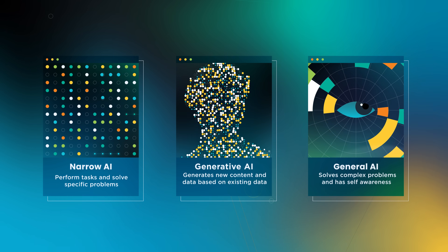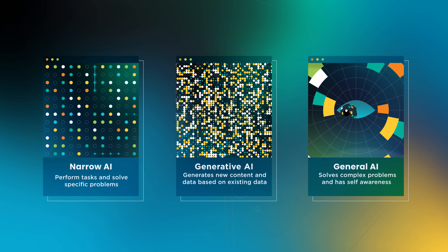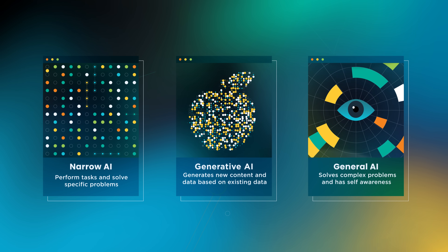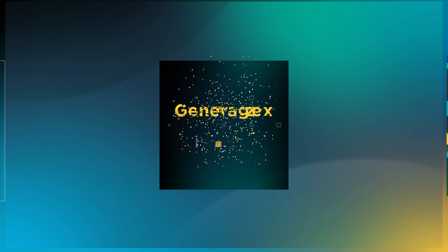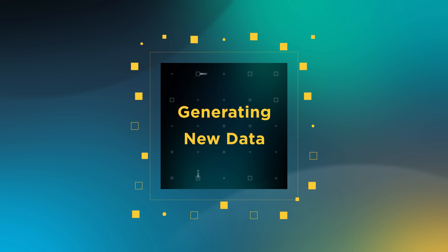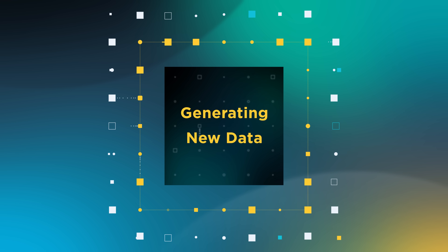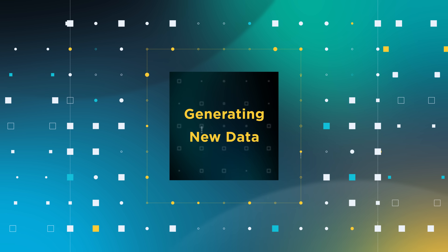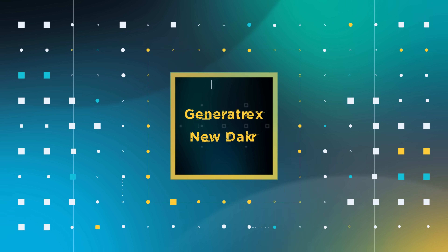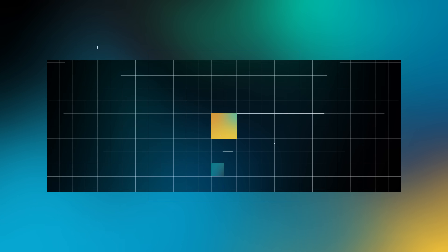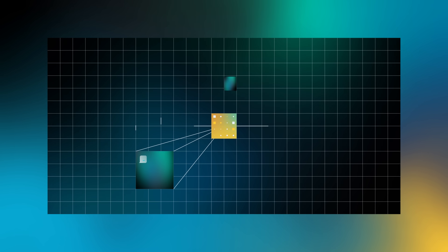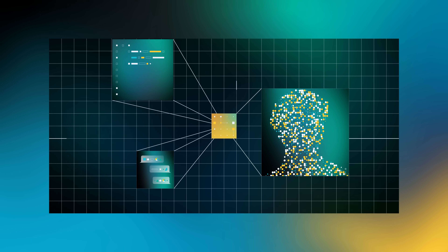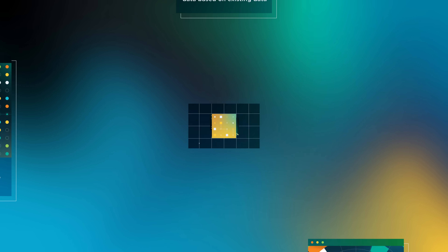Generative AI, on the other hand, focuses on creating new content or generating new data based on the knowledge it has acquired from existing data. These systems are great at generating text, images, and code in response to prompts.